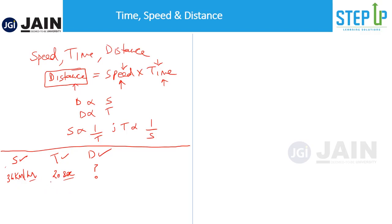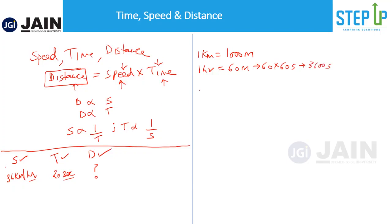I will explain a simple concept of how to convert things into the same unit. We know that one kilometer equals one thousand meters. We also know one hour equals 60 minutes, and since each minute has 60 seconds, one hour equals 3600 seconds. So you can convert kilometer per hour into meters per second so that both units are in seconds and you can calculate distance in meters.